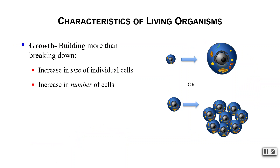Living organisms are capable of growth, which means we are building more than we are breaking down. You can either increase the size of an individual cell — take one cell and it gets bigger — or you can increase the number of cells, making tens, hundreds, and thousands of that cell. Both of those count as growth.